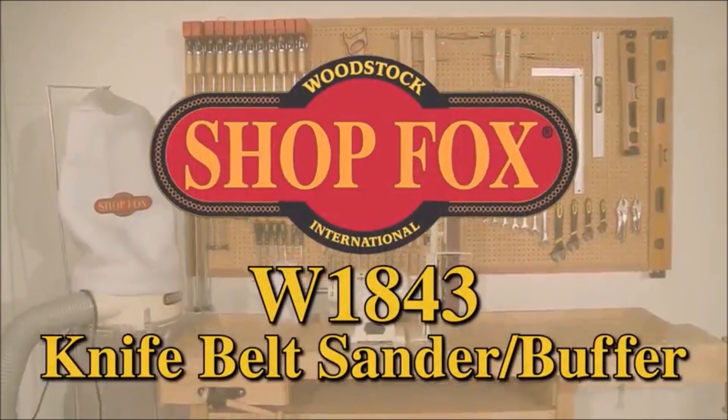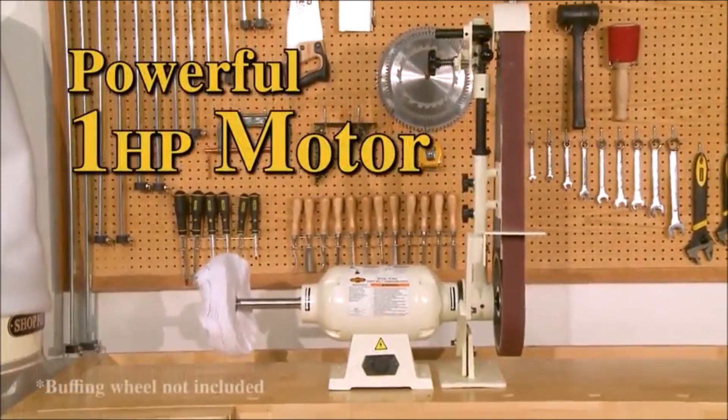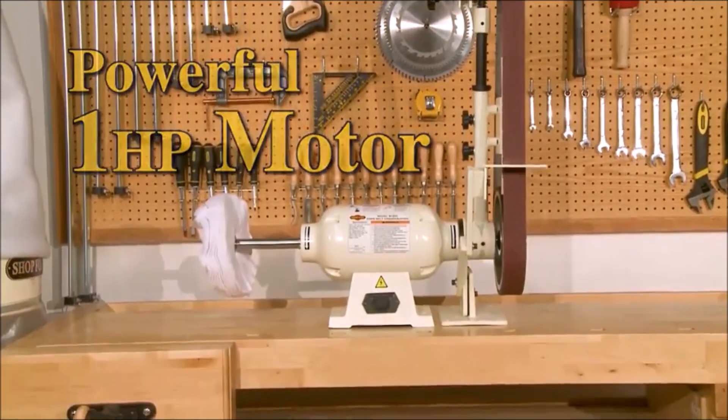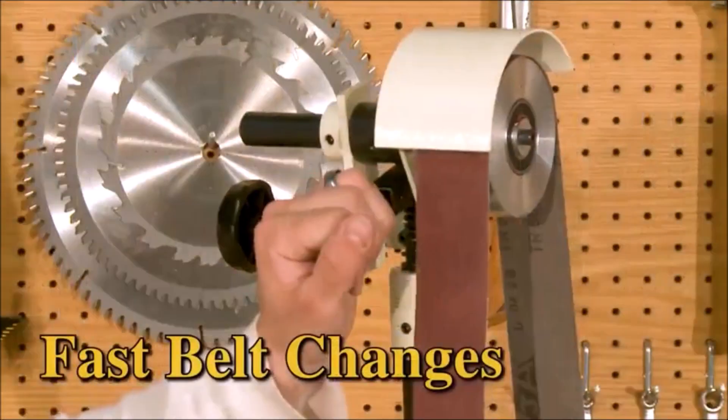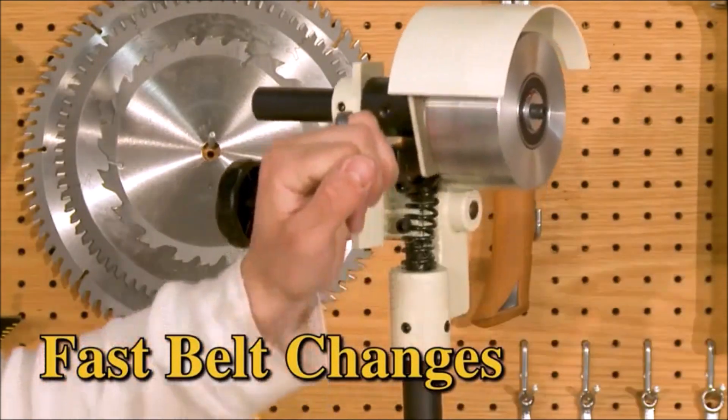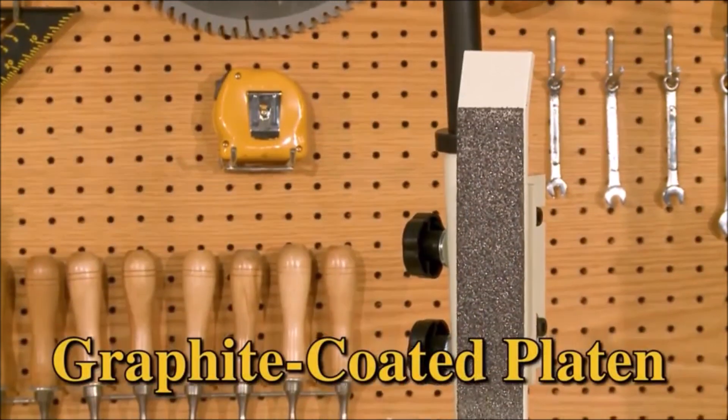Shop Fox Knife Belt Sander, Buffer. Very popular with knife makers, this knife belt sander, buffer features a cool running 2-inch by 72-inch abrasive belt and an extended buffing wheel shaft for full-access buffing or stropping.